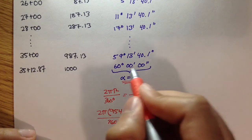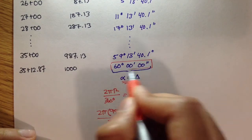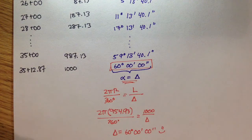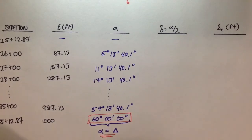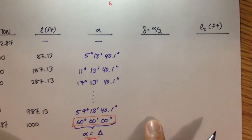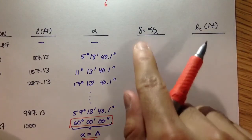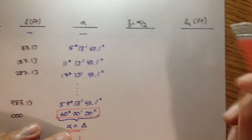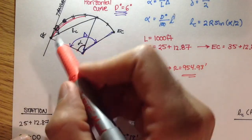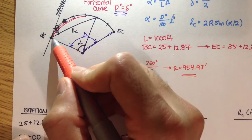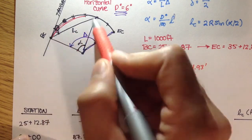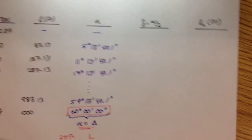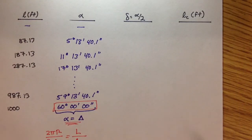In the next video, I'll go ahead and solve for the deflection angle and the chord length from BC to each of these points, which is what we need to stake out this curve.